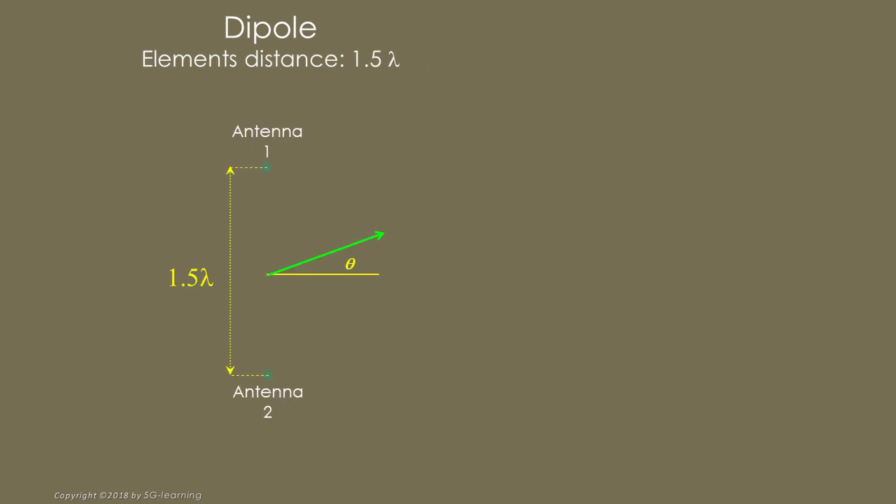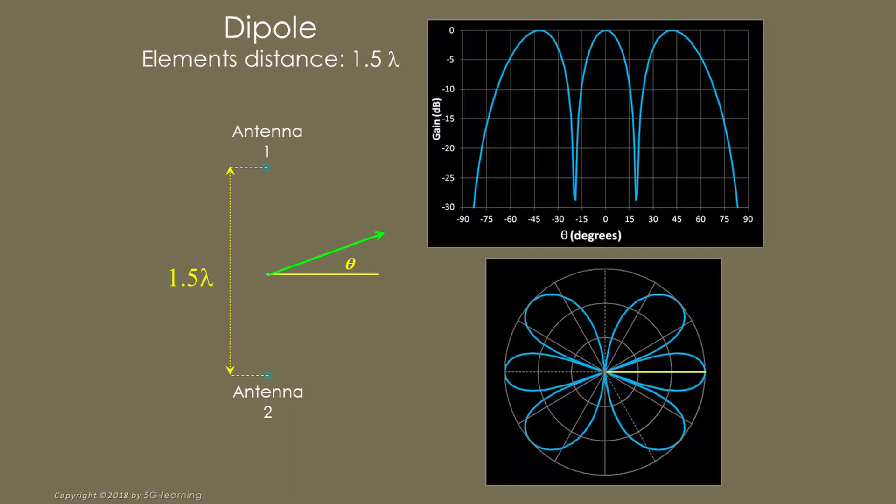As a last example, let's extend to one and a half lambda the distance between antenna elements. The radiation patterns become even more complex. Note that the main lobe becomes narrower than in the previous case, passing from 60 degrees to 38. Furthermore, the number of secondary lobes increases. This is a behavior that we will find again in the future. When the sharpness of the main lobe increases, additional secondary lobes show up.